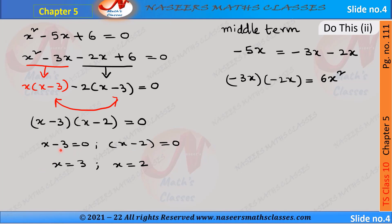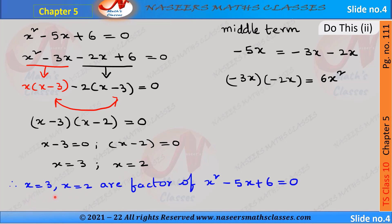It can be written as (x - 3)(x - 2) = 0, so x - 3 = 0 and x - 2 = 0. Transposing, x = 3 and x = 2. Therefore x = 3 and x = 2 are the roots of the quadratic equation x² - 5x + 6 = 0.